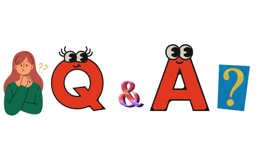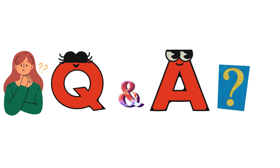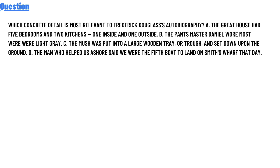Our today's question is: which constraint detail is most relevant to Frederick Douglass's autobiography? Option A: the great house had five bedrooms and two he chose — one inside and one outside. Option B: the pants master Daniel's award most were...